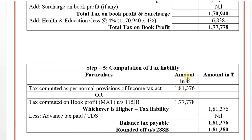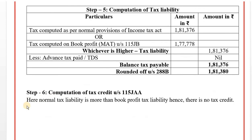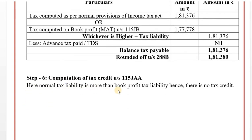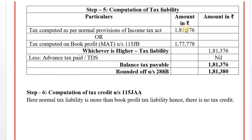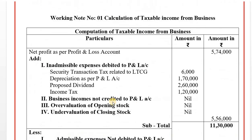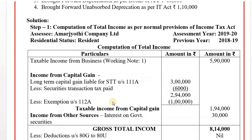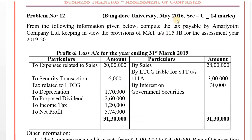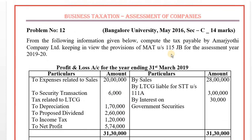Step 6: Tax Credit. Since normal tax liability is more than book profit tax liability (MAT), there is no MAT tax credit available. The normal provisions tax liability governs. This completes Problem No. 12, asked for 14 marks in the Bangalore University examination of May 2016. Thank you.